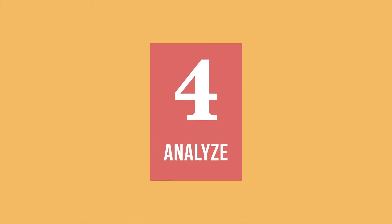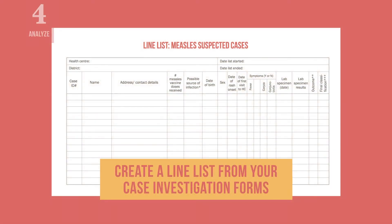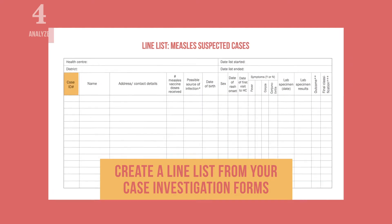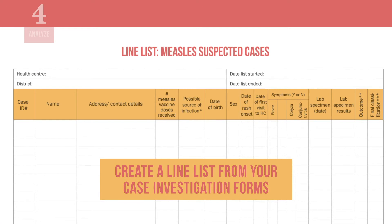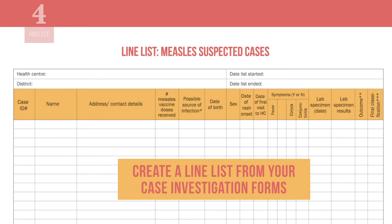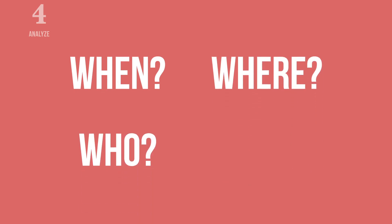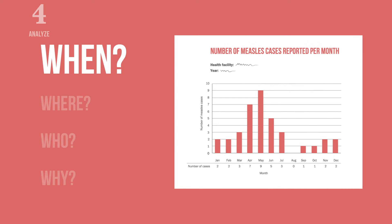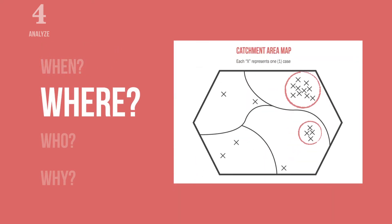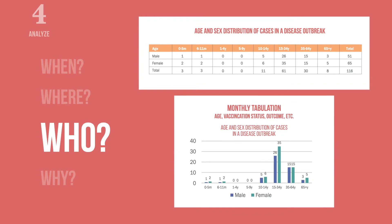Next, compile and analyze the data you've collected on the disease cases. Create a line list from your case investigation forms showing each case's name, age, address, sex, immunization status, other risk factors, and lab results. Like when analyzing higher-level surveillance data, it is important to answer these questions when investigating an outbreak: When did people get sick? Where are they located? What populations are affected? And what are some possible causes? This involves drawing an epidemic curve, plotting cases on a spot map, and analyzing the immunization status and ages of cases.